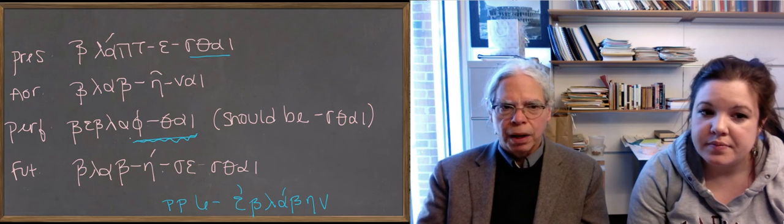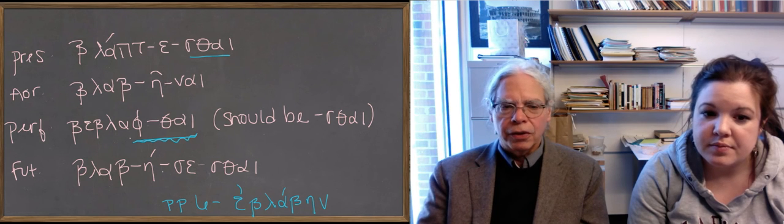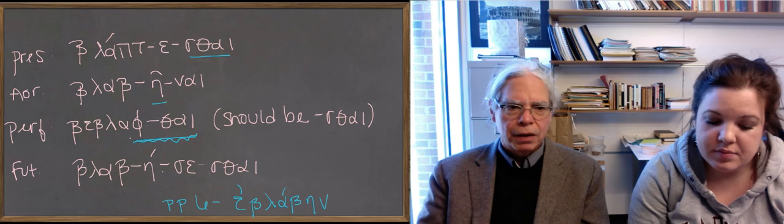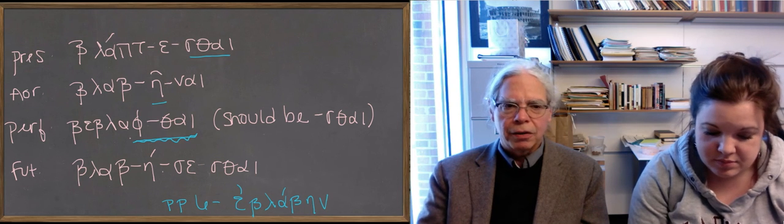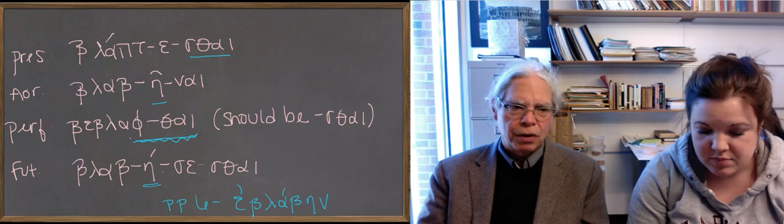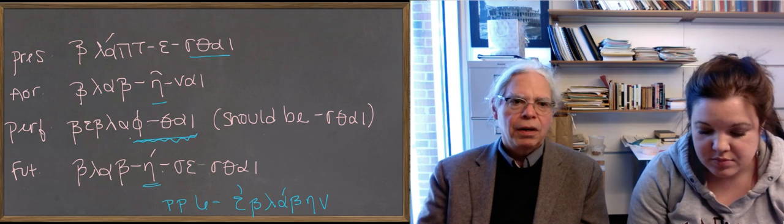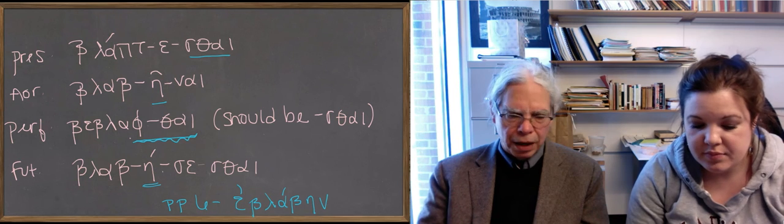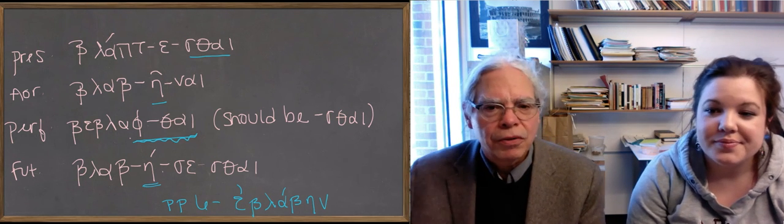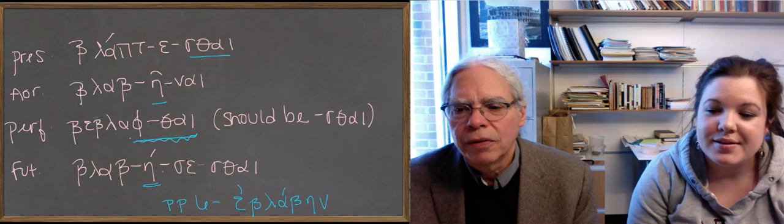And then the aorist passive is βλαβῆναι. Now, you've got the eta as the sign of passiveness, not the theta-eta. And in the future, βλαβησεσθαι, again, no theta, σε the sign of the future, and the σθαι ending because the aorist passive has active endings, the future passive is passive. And that's the way you form these infinitives in these verbs.